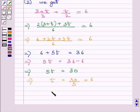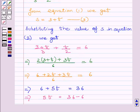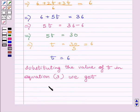t comes out to be equal to 6. Now, we will substitute the value of t in equation 3. Substituting the value of t in equation 3, we get s is equal to 3 plus t which is equal to 3 plus 6, or this implies s is equal to 9.